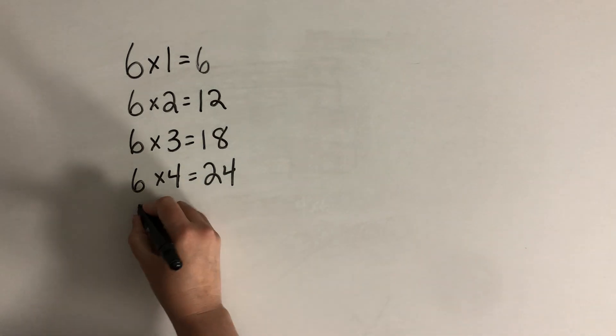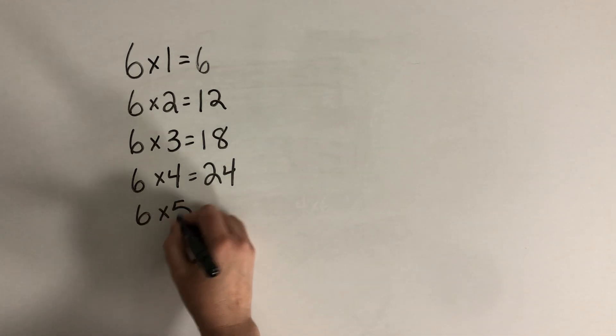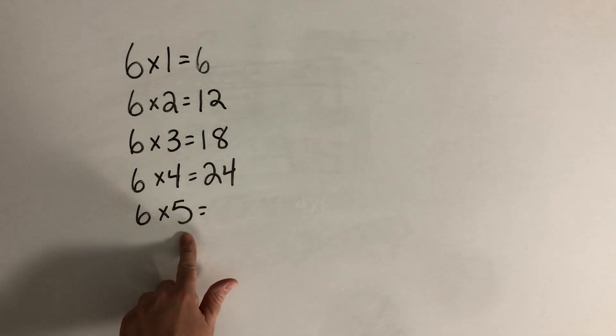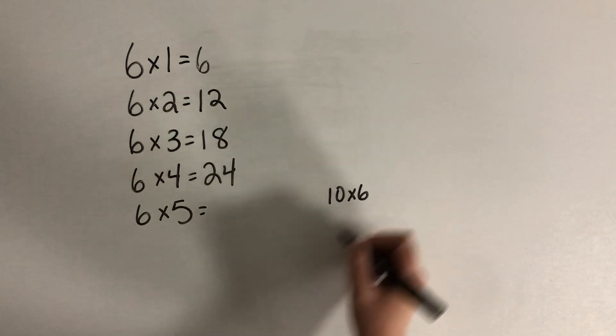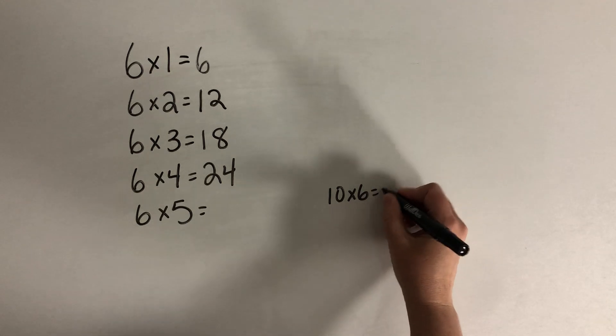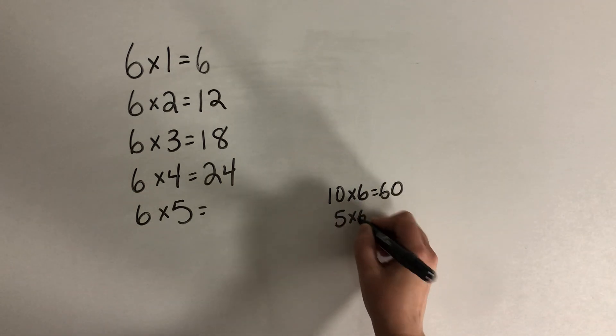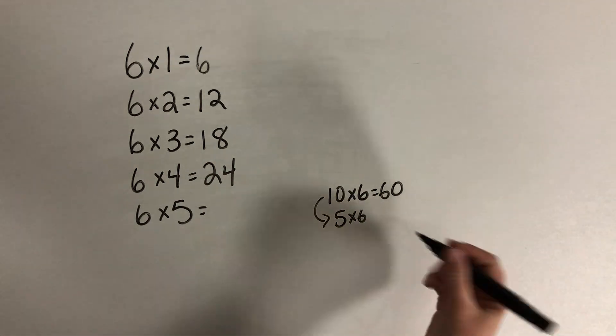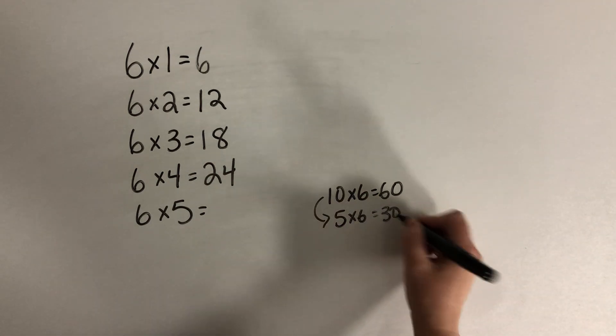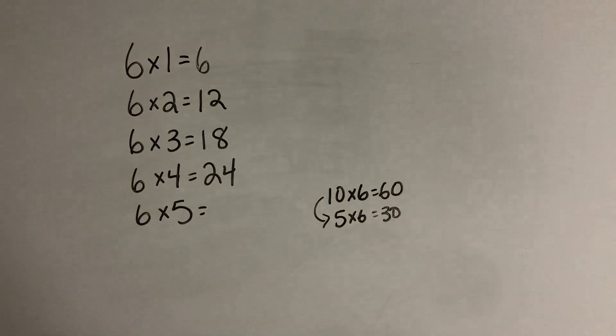Now 6 times 5. For this one, I'm going to use what I know about 5s. So I know that I can start with the 10s fact. So I can think to myself, 10 times 6 is 60. So 5 times 6 is going to be half of that, because I'm taking away half of the rows. So it's going to be 30, because 30 is half of 60.